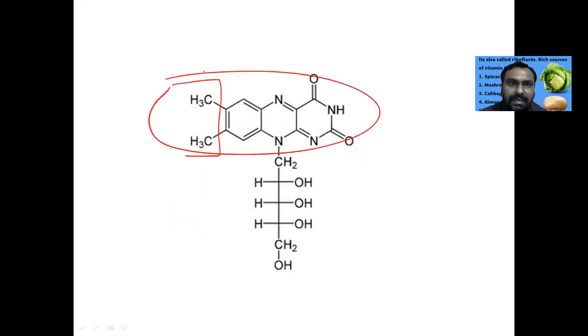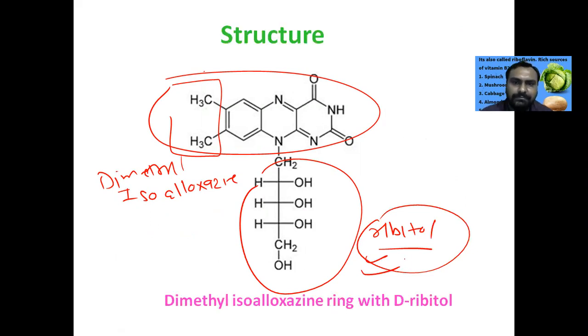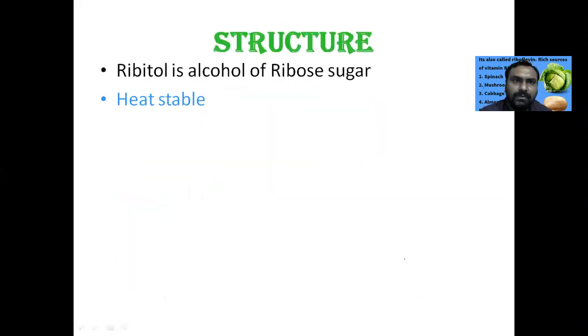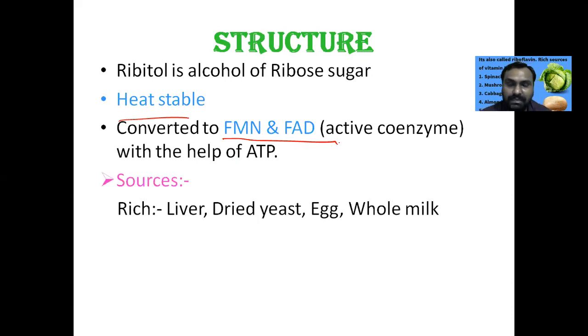Here is the structure. There is a dimethyl isoalloxazine ring which is attached to ribitol. This ribitol is the alcohol of the ribose sugar. So it is heat stable. This riboflavin is converted to FMN and FAD with the help of ATP.